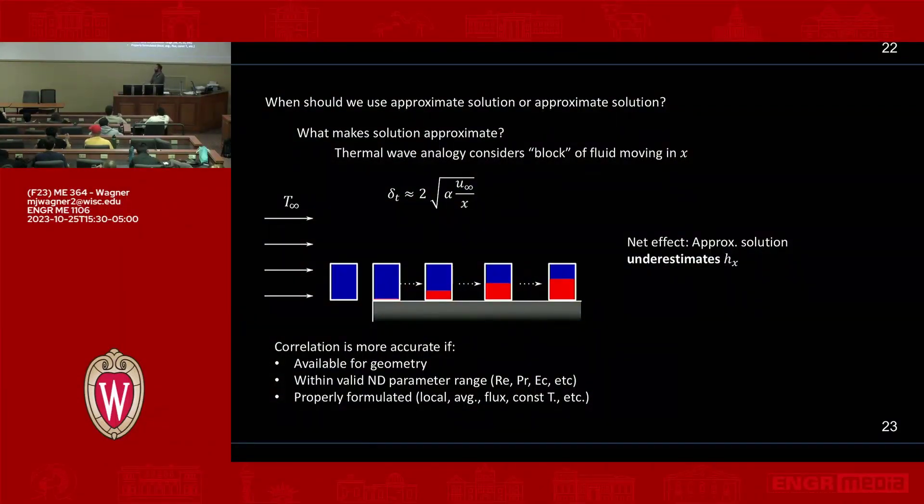We have this question: we have approximate solutions, we have these correlations. What's the difference between them and when should I use an approximate? Remember, approximate would be something like H at X is equal to K over delta T. You're approximating your heat transfer coefficient by taking the ratio of the conductivity to the boundary layer thickness. When we want to do a really accurate model, we would not use that. We would use a correlation that evaluates Nusselt, and then we relate the Nusselt to the heat transfer coefficient.